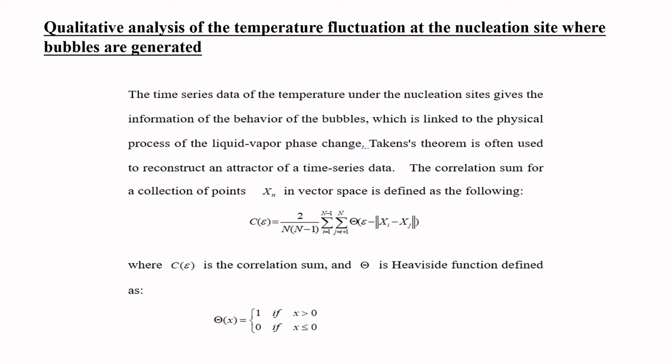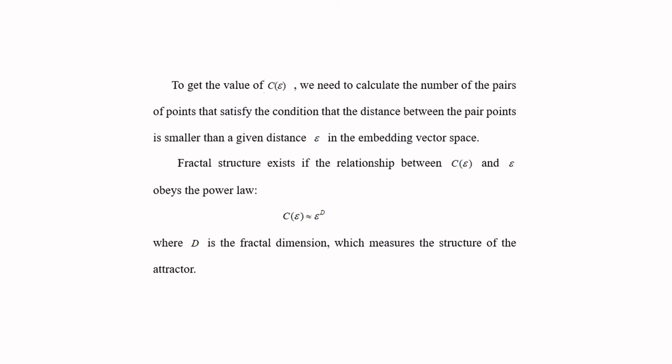The correlation sum for a collection of points in vector space is defined by this formula. Here, C is the correlation sum, and this symbol denotes a Heaviside function. For a Heaviside function, if x is larger than 0 it equals 1; otherwise it equals 0. To obtain the value of C — which is a function of epsilon — we calculate the number of paired points satisfying the condition that the distance between them is smaller than a given distance in the embedding vector space.